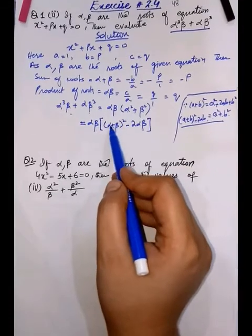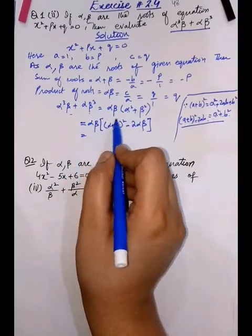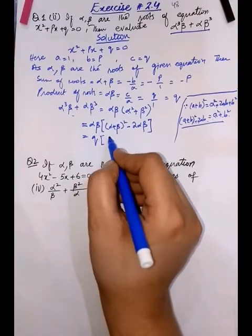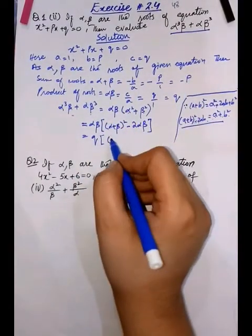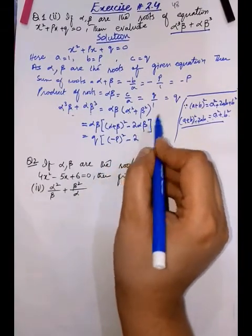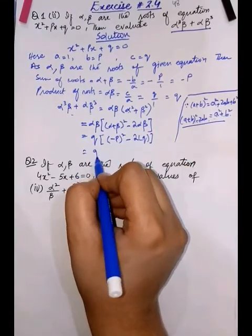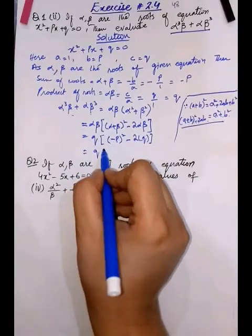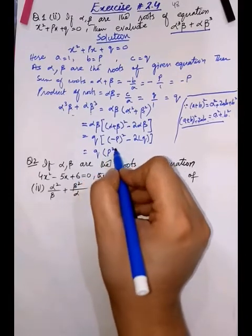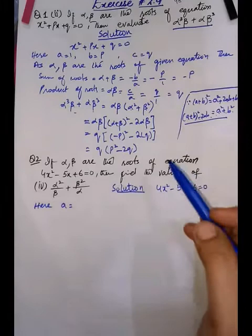Now to simplify, we just put in the values. The value of alpha·beta is Q, and the value of alpha plus beta (sum of roots) is minus b. So we substitute: (−b)² − 2Q. Simplifying, the minus sign cancels due to squaring, and we get p² − 2Q.